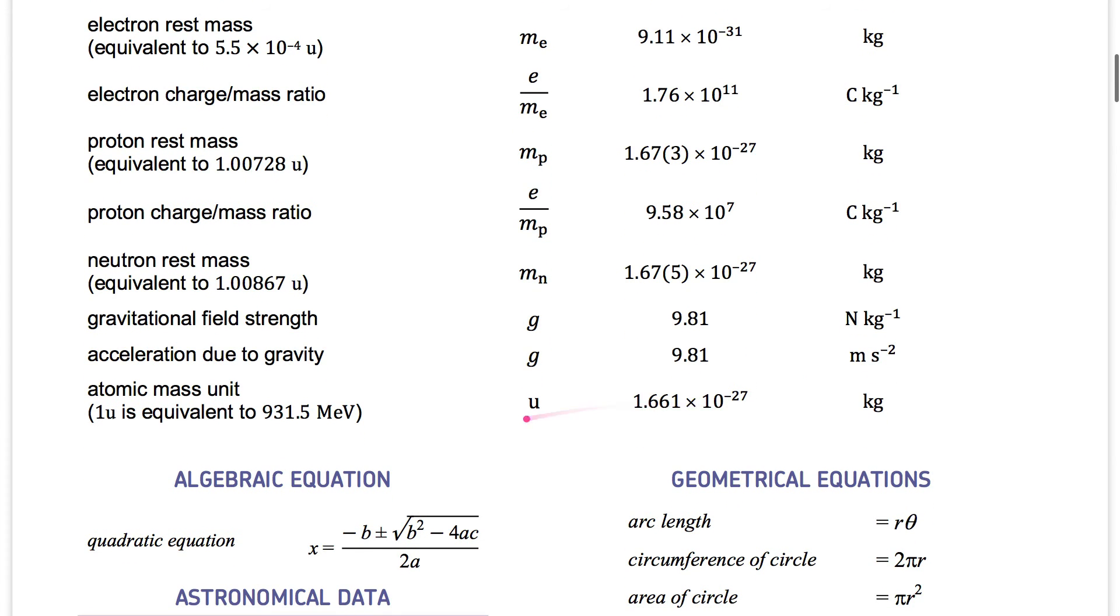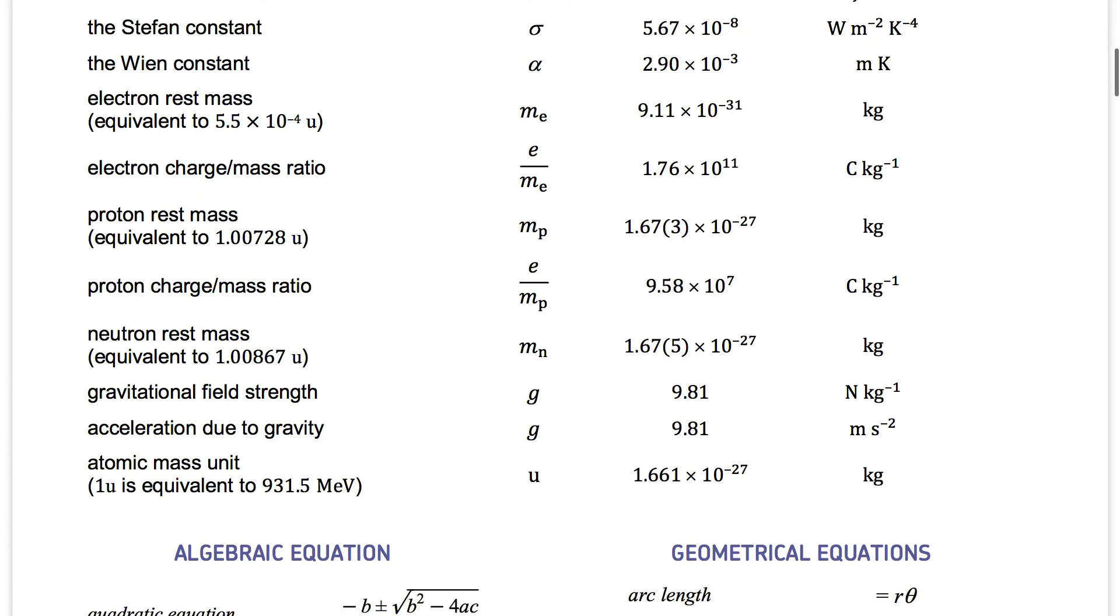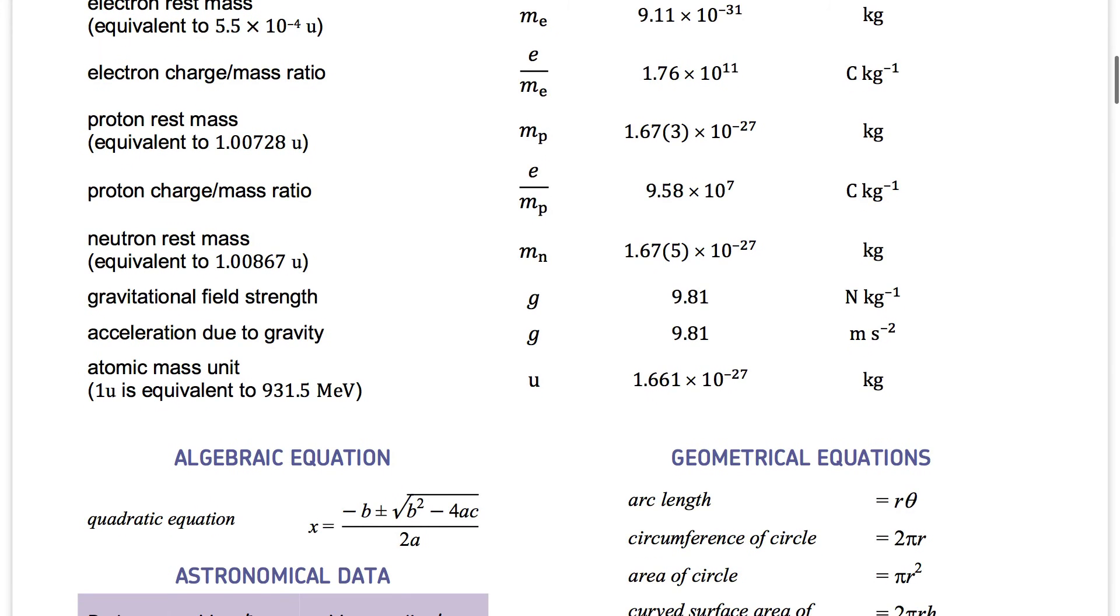Atomic mass unit. One atomic mass unit, or one U, is equivalent to 931.5 mega electron volts. The symbol is U for unit. And 1.661 times 10 to the minus 27 is the magnitude, and the kilogram is the unit that is used.